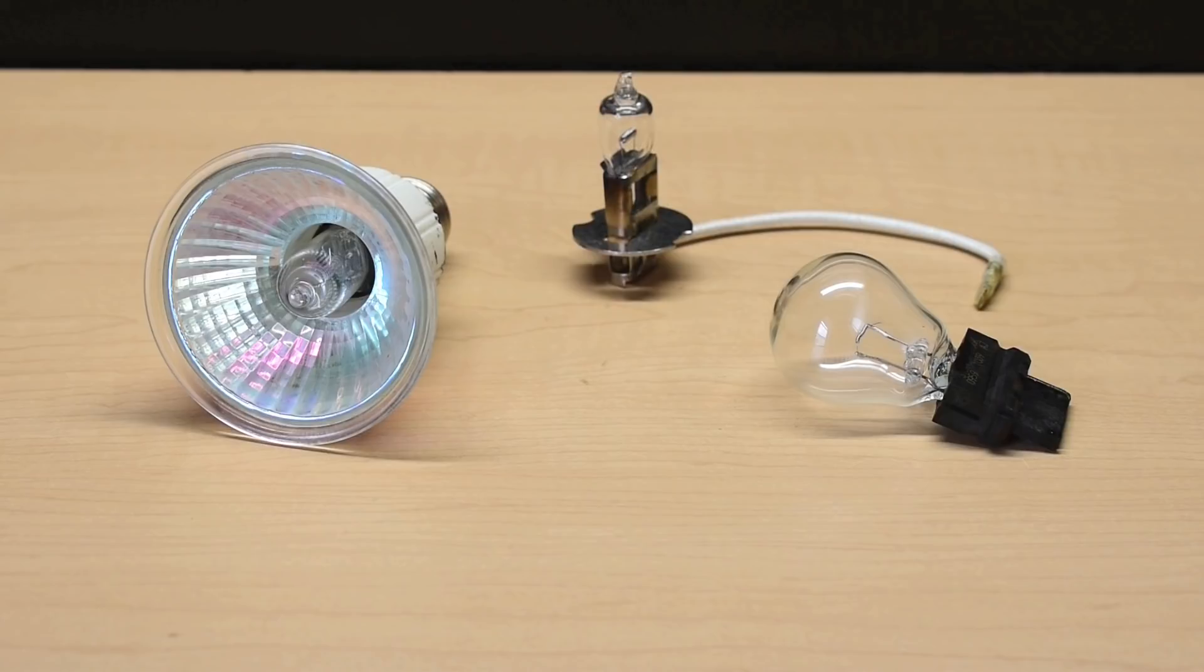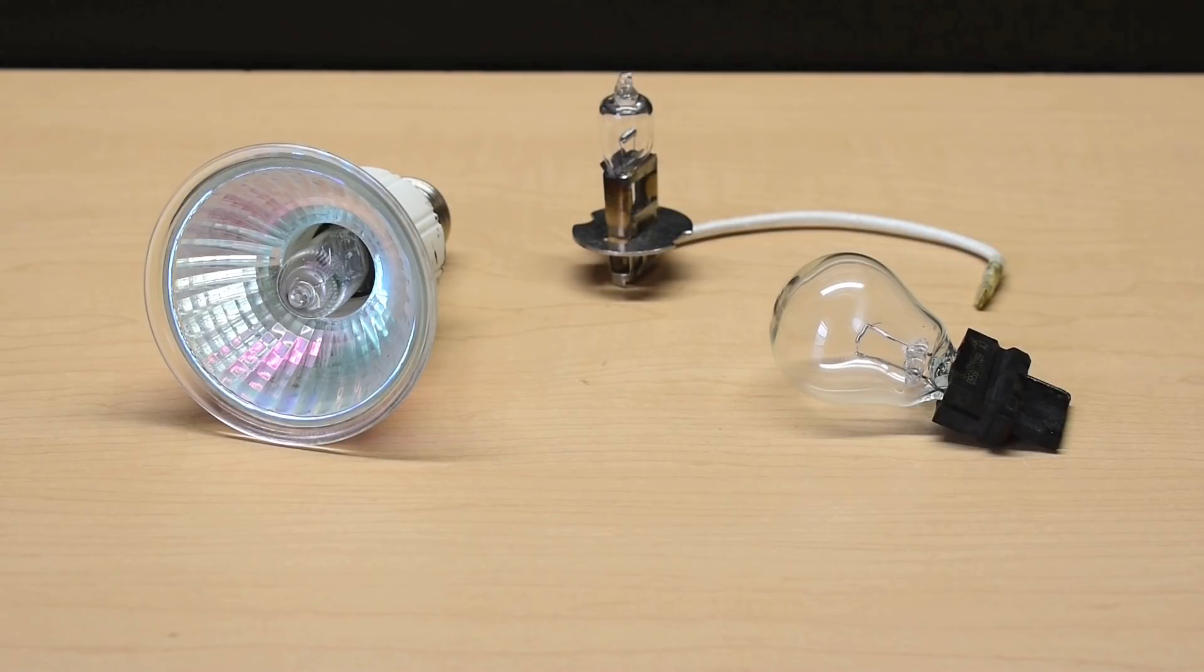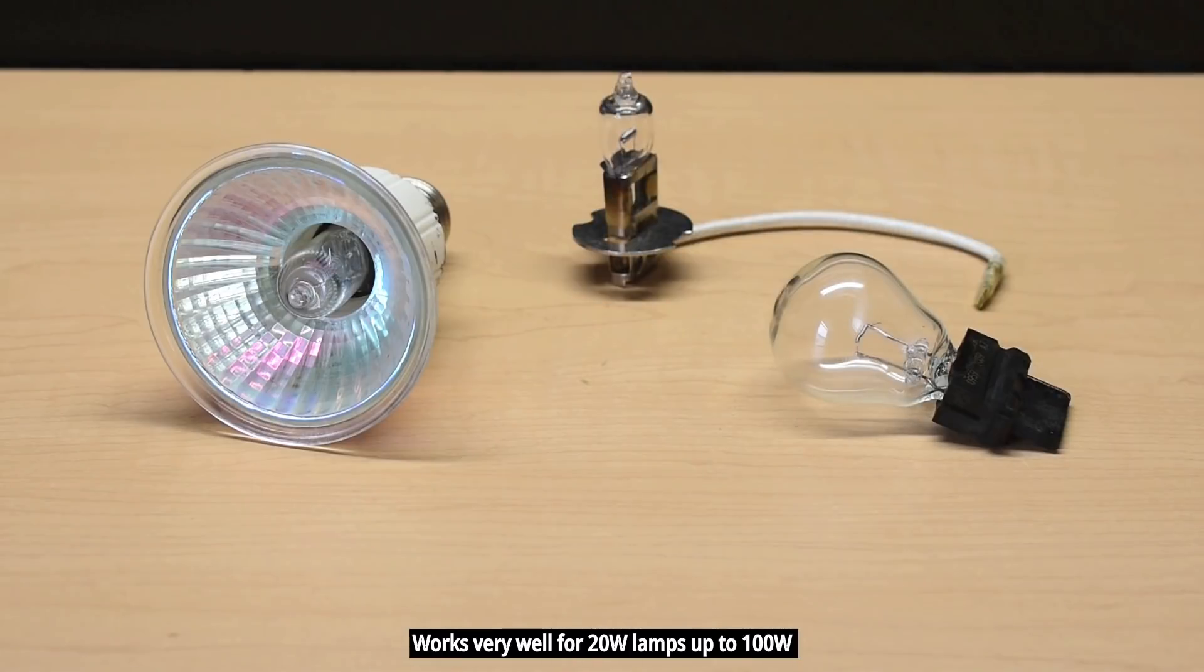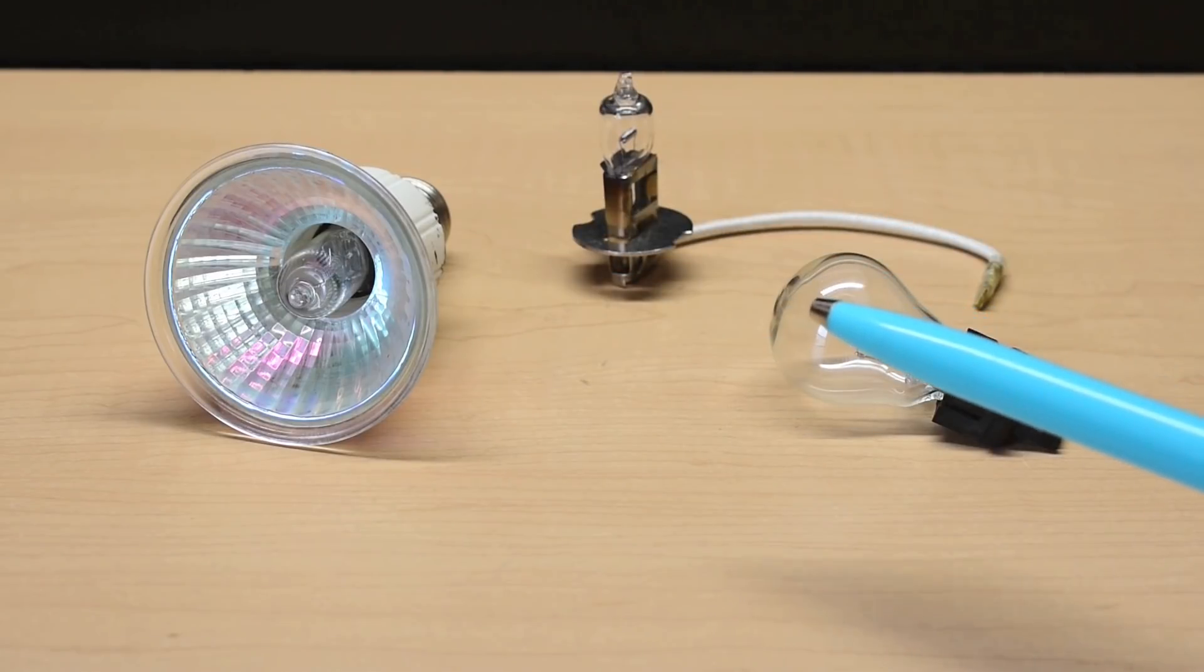As usual, when working with 120 volts or 240 volts AC, safety is of utmost importance. The method I'm going to show you only requires one component to make these bulbs operate at full brightness. I'm also going to show you two extra components that you can add in to increase the safety of the circuit.